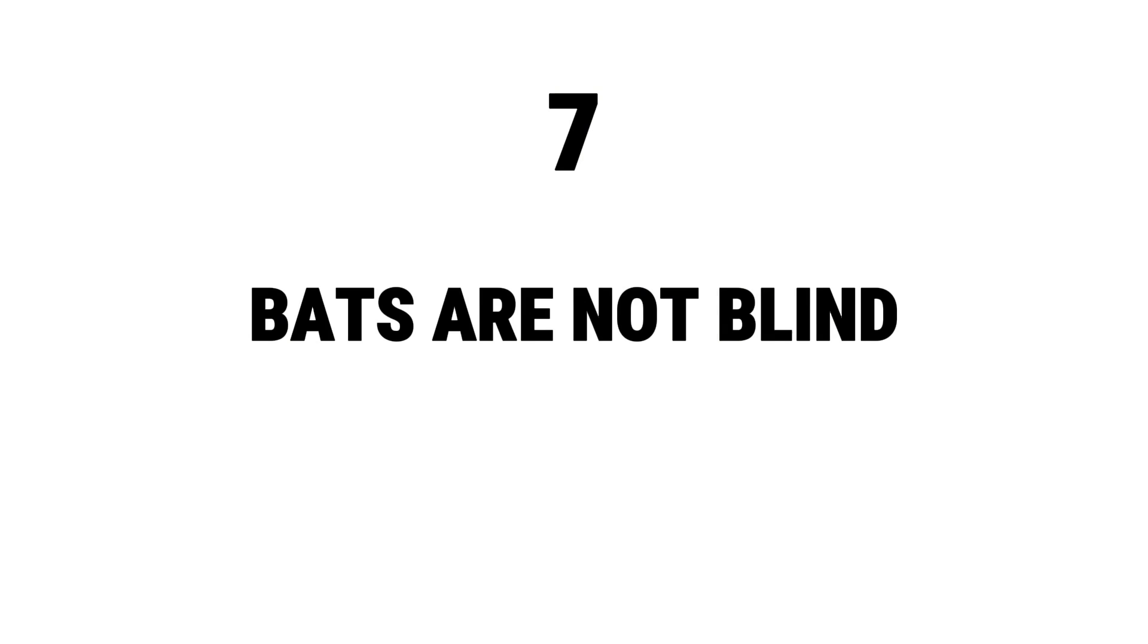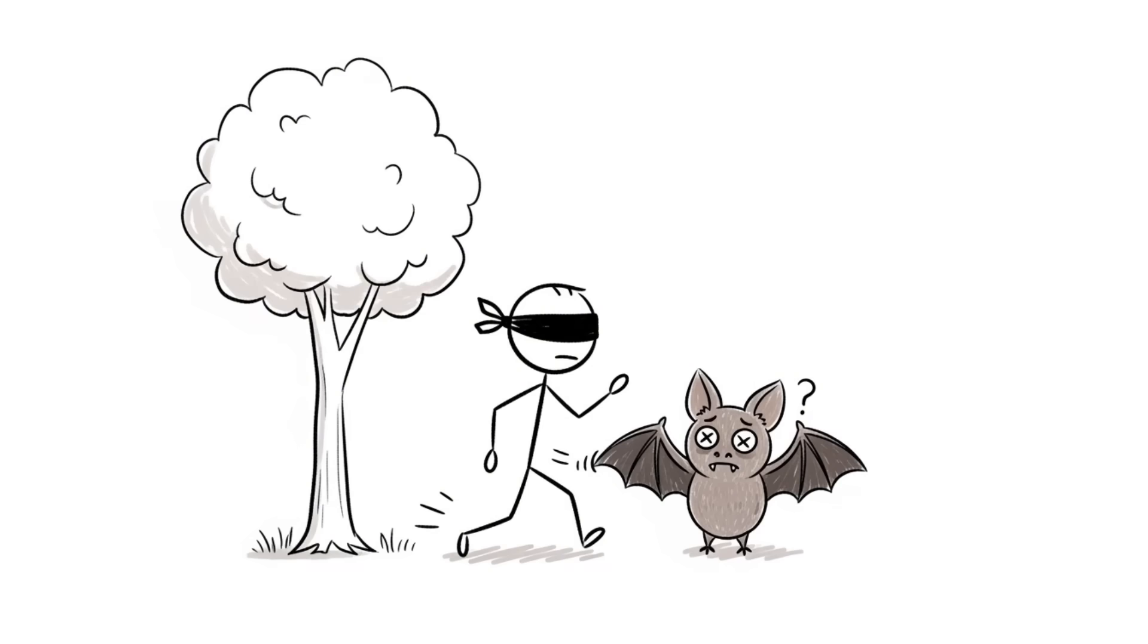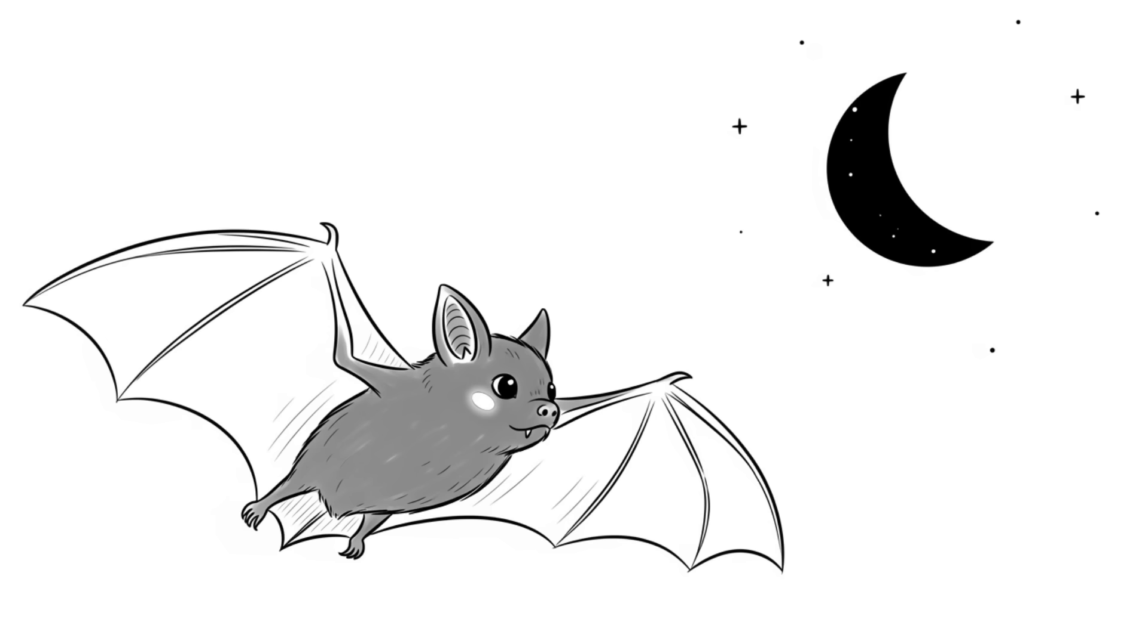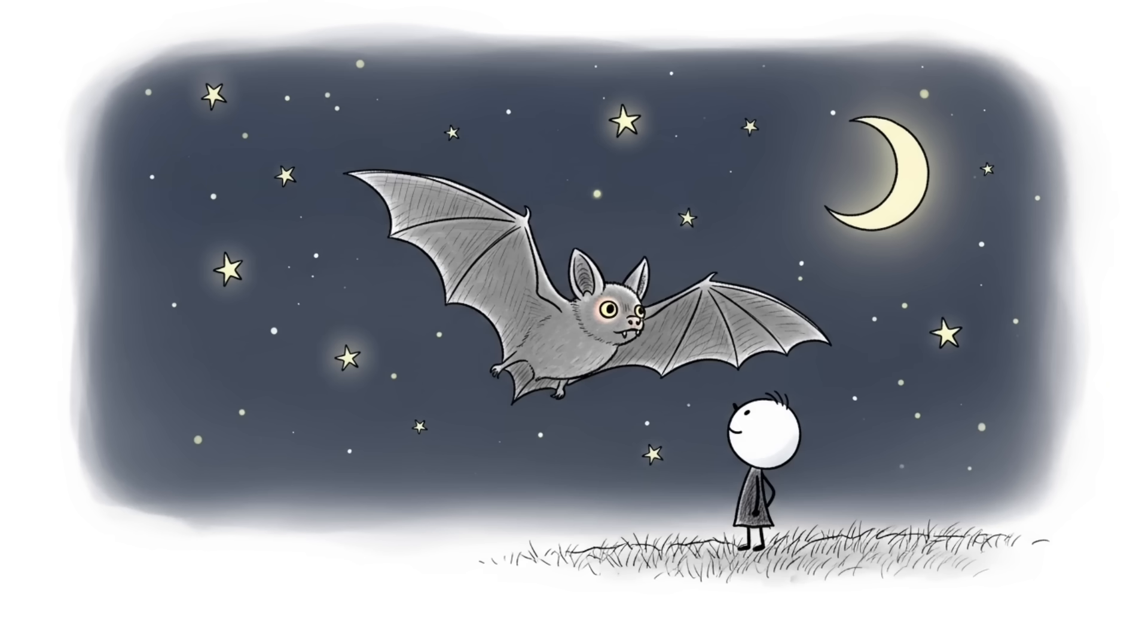Number 7. Bats are not blind. You've probably heard of the phrase blind as a bat, which is used to describe someone with poor eyesight. But that whole idea is completely wrong. Bats can see just fine. They have small sensitive eyes that are great at navigating in darkness.